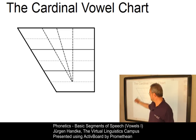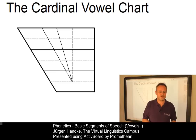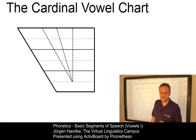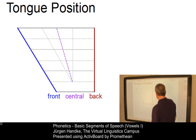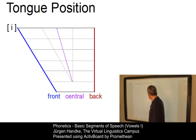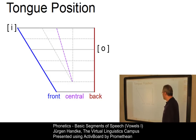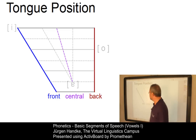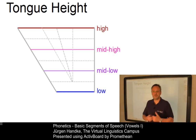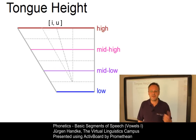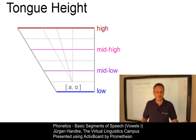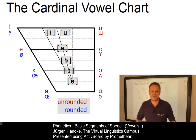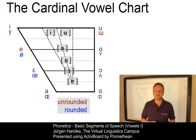Here is the cardinal vowel chart in accordance with the International Phonetic Association. Depending on the location of the narrowing in the vocal tract, vowels can be defined as front, central, or back — for example, E is a front vowel, O is a back vowel, and A is a central vowel. The second parameter, tongue height, allows us to define high vowels like E and U, mid-high vowels like E and O, mid-low vowels, and low vowels. This chart now serves as a reference system for all sorts of vowels used in the languages of the world.